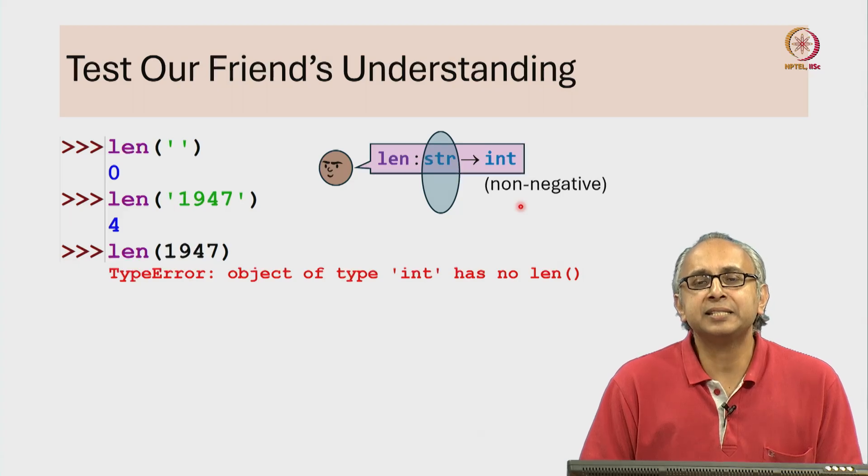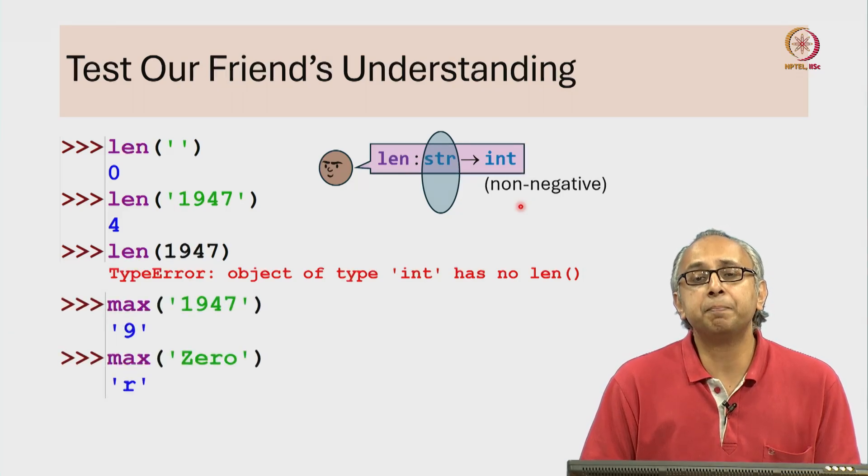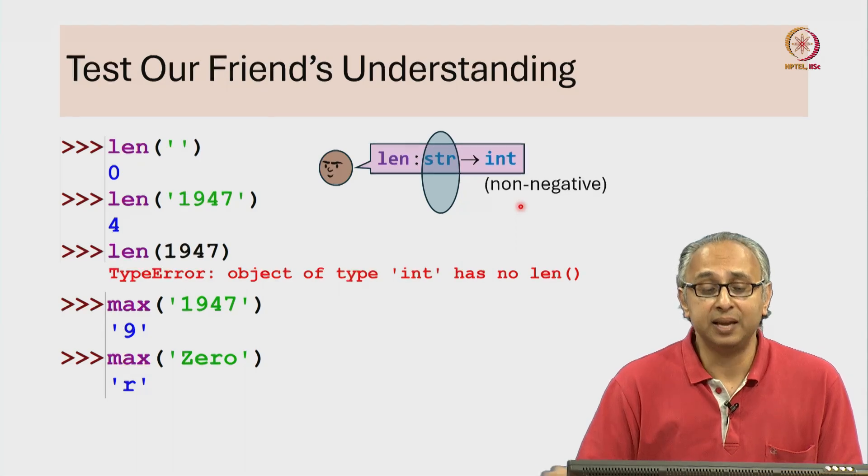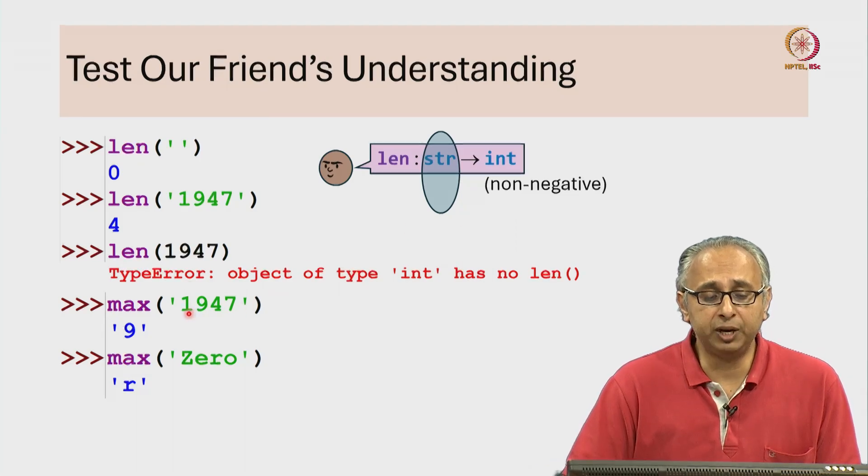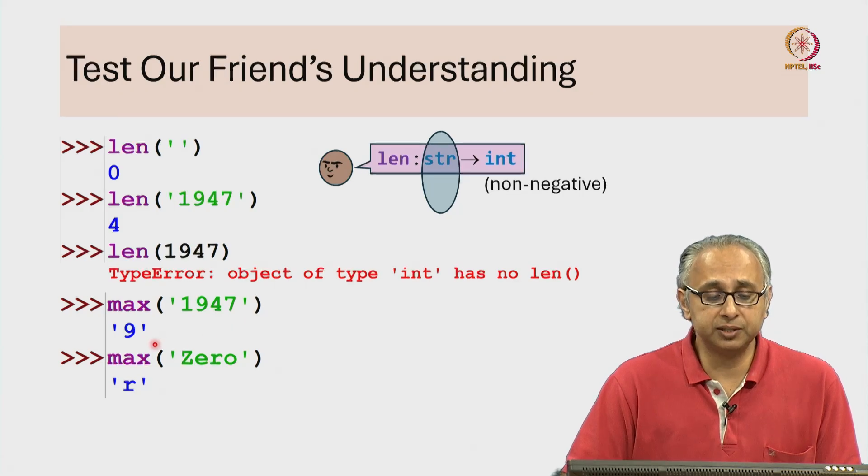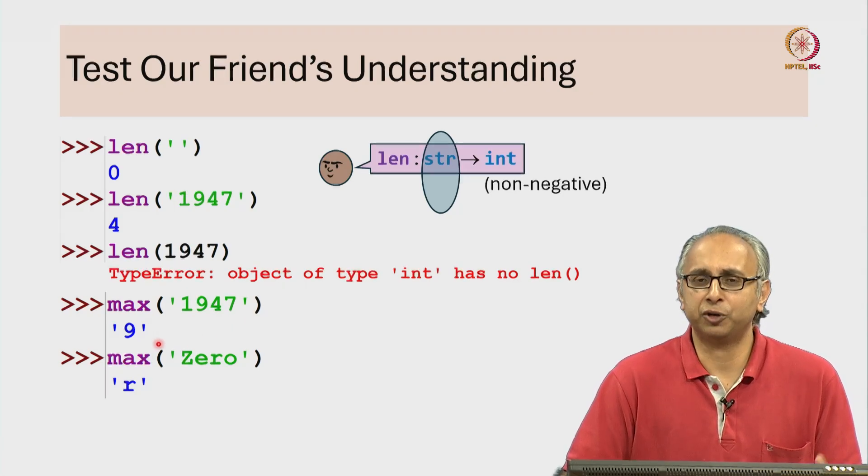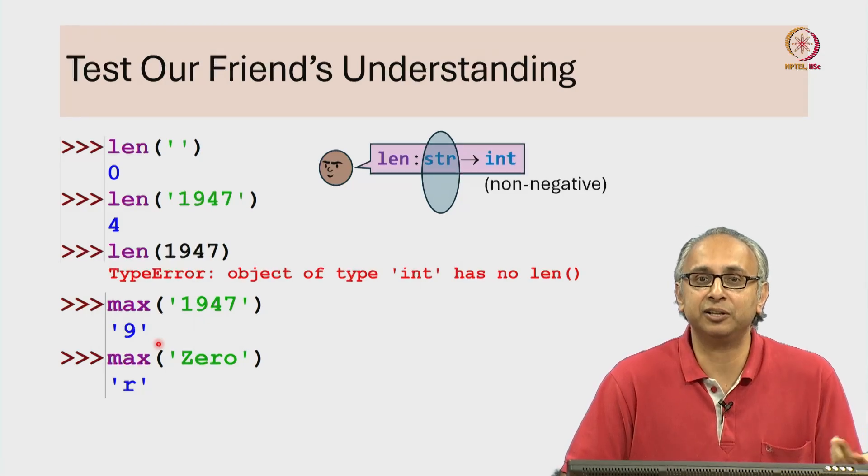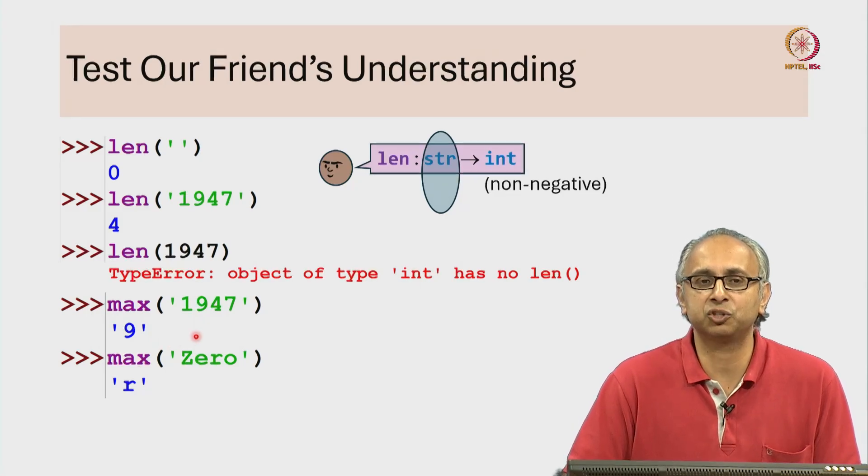Let's take a look at a second example of a built-in function. It turns out there is a built-in function max and once again you can give it a string. If I give it the string 1947, it returns the 9. So this seems like a very useful function. It seems to be able to find the largest letter or largest character in a given string.